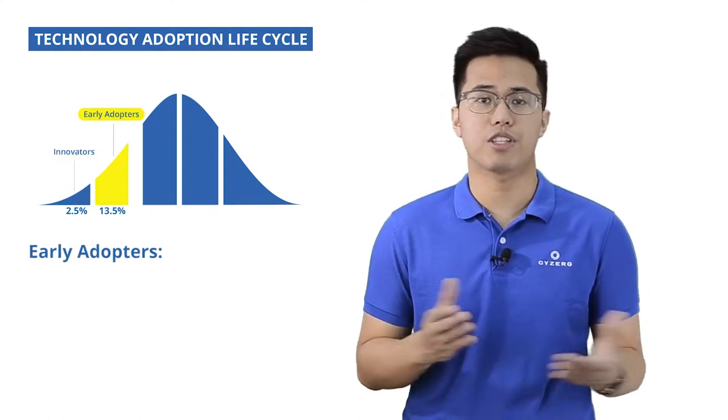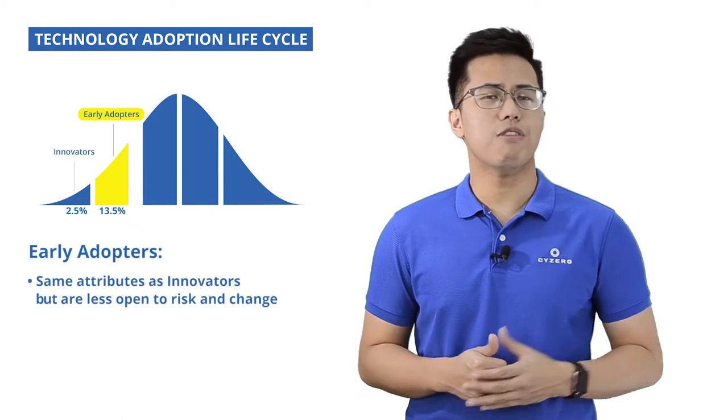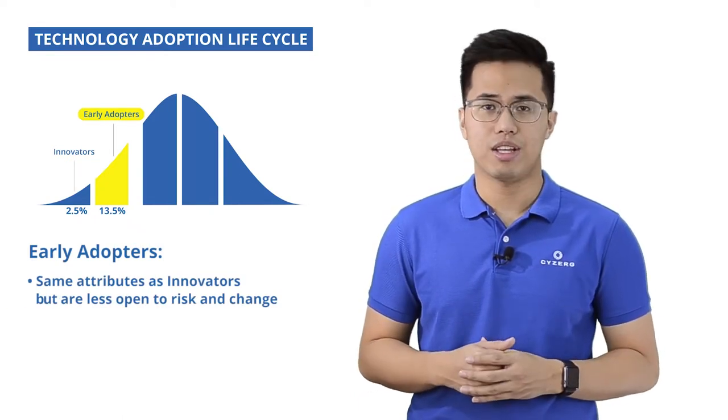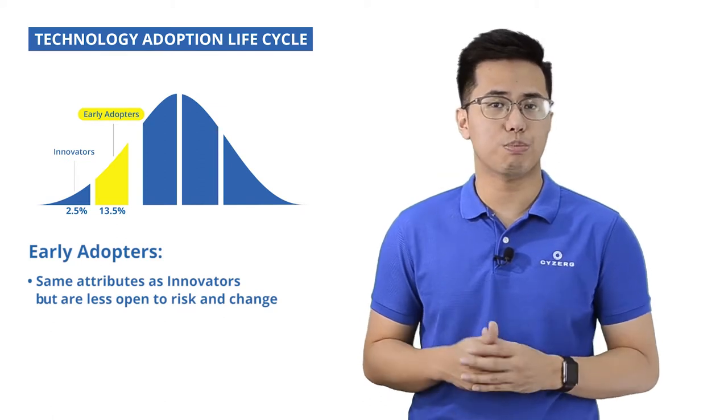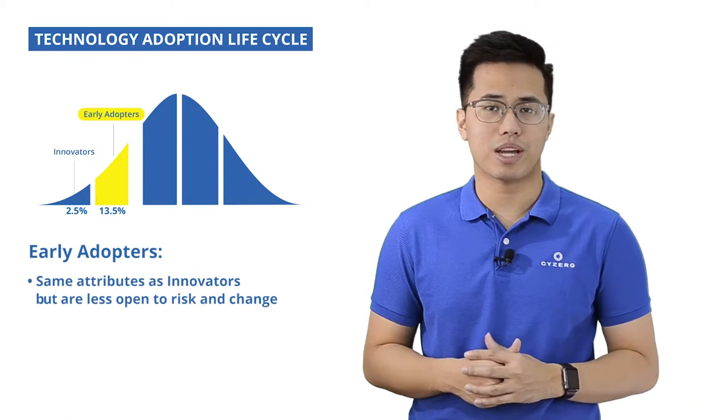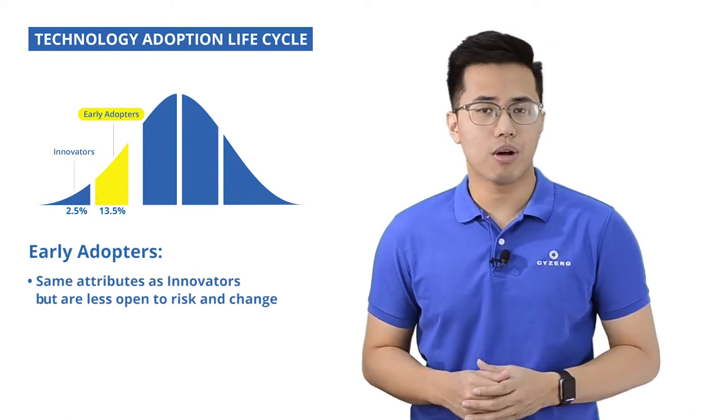Next are called the early adopters, which makes up 13.5% of the adopter population. They also are fairly young, well-educated, high reputation, and financially sound. They are fairly open to risk and change, but less likely compared to innovators. Finally, they also are characterized by thought leadership. Next is a point called the chasm of death.